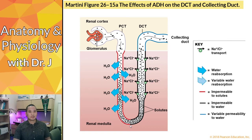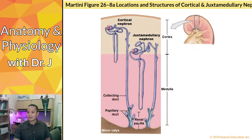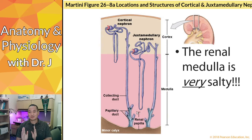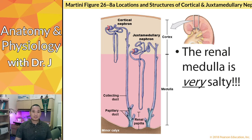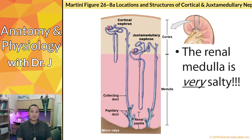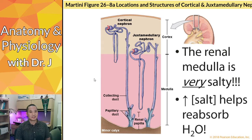The saltier the medulla gets, the more water it draws out from the descending limb. The more water drawn out, the more ions you have, and the more sodium chloride you can pump into the renal medulla — it builds upon itself. This concept is called the counter-current multiplier. The renal medulla being very salty drives the osmosis that reclaims water from the forming urine. Without a salty medulla, you'd lose a lot of water every time you urinate, so this increased salt creates an osmotic gradient that draws water back from the renal tubule.